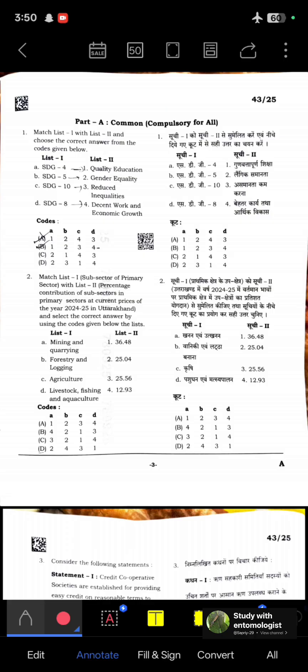Next: Match list one subsectors of primary sector with list two, the percentage contribution at current prices of 2024-25 in Uttarakhand. Mining and quarrying is 25.04%, forestry and logging is 12.93%, agriculture is 25.56%, and livestock, fishing, and aquaculture is 36.48%, which is highest.